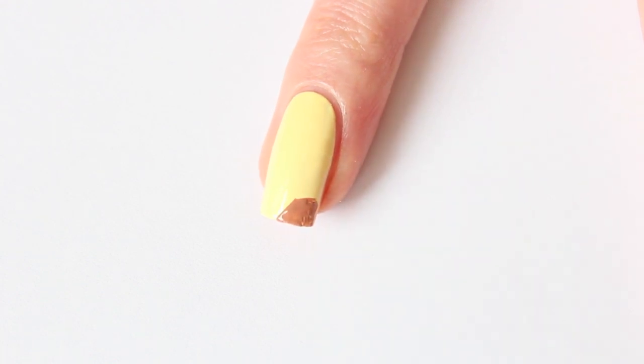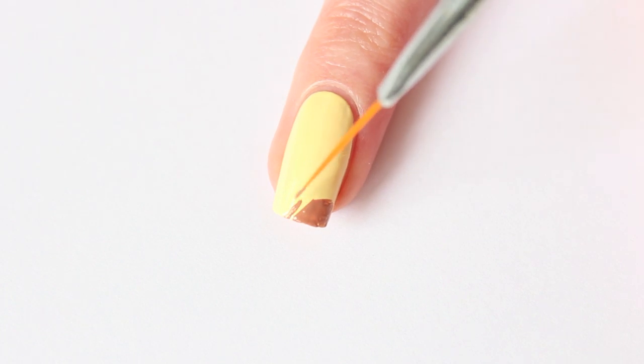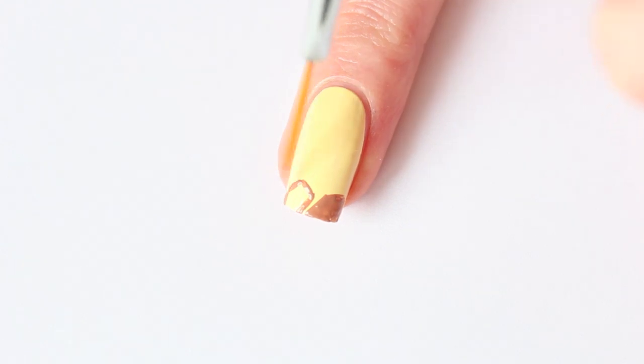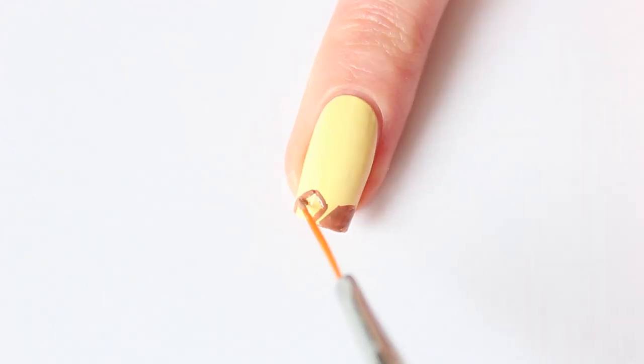Since we're working with nail polish and not acrylic paint, you need to use some fresh nail polish every time you notice it doesn't apply as well anymore, because the nail polish on the piece of paper is then already too dry.